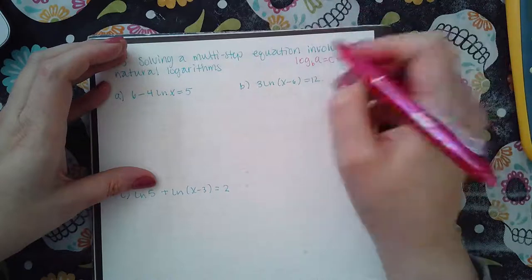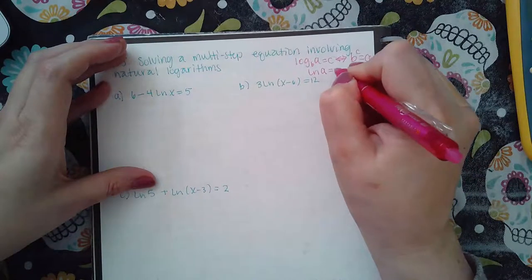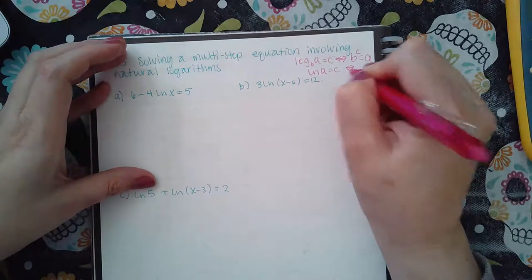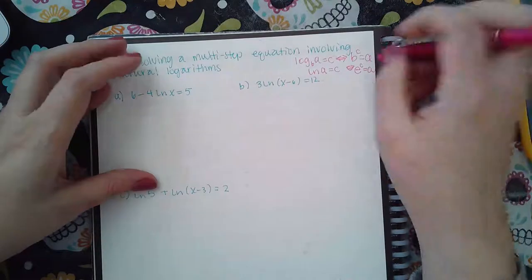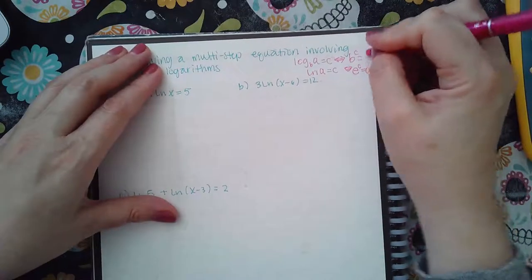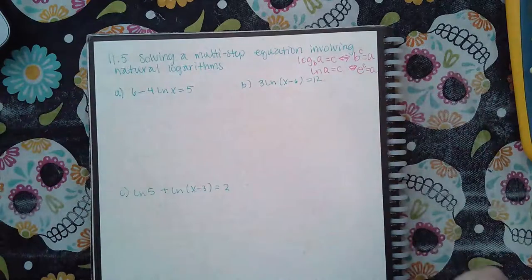Now for ln, remember that the base is e, so when you switch over the form the base needs to be e and then equal to the argument. So it is the same formula, it's just you're specifically using a special case when it's base e.